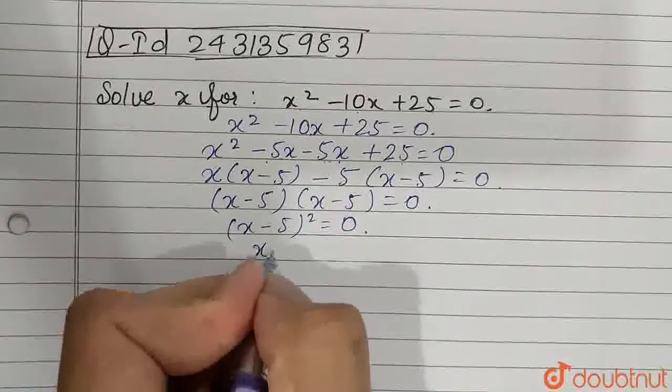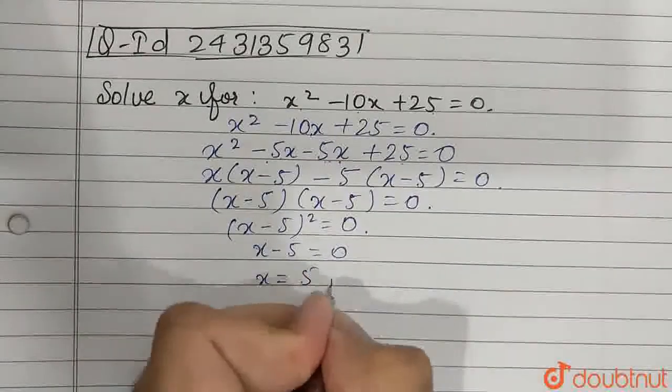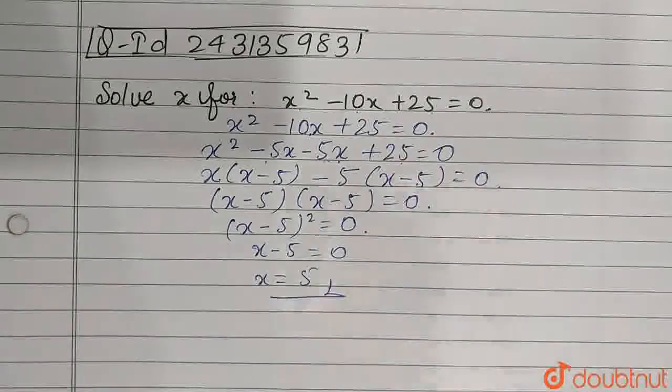So x - 5 = 0. Taking square root on both sides, x = 5. The value of x is 5. Thank you so much.